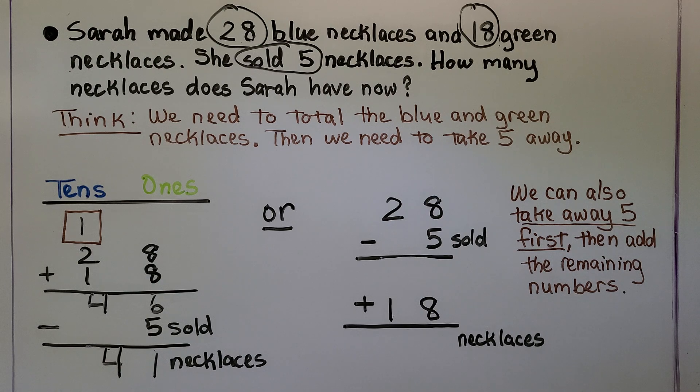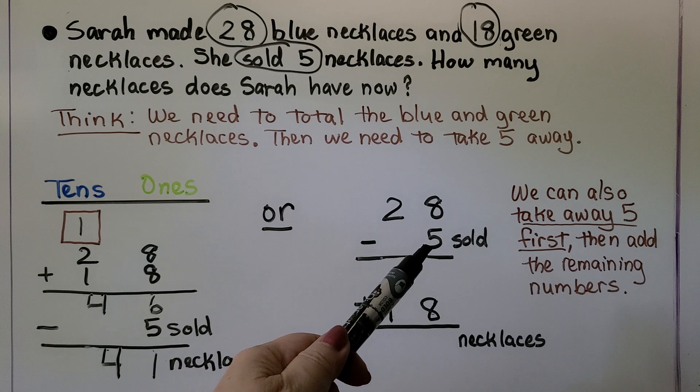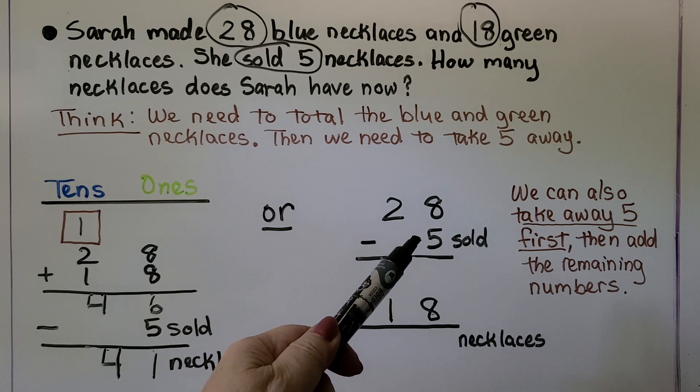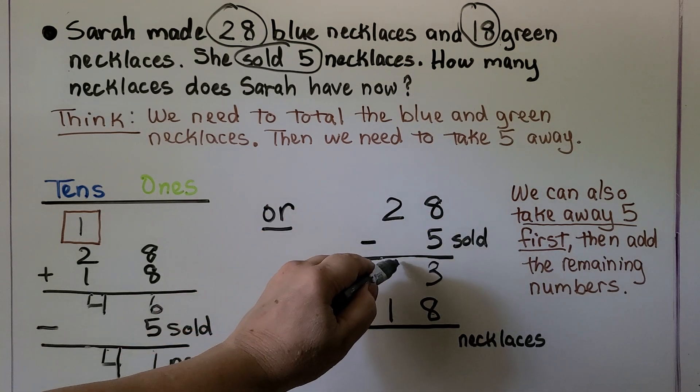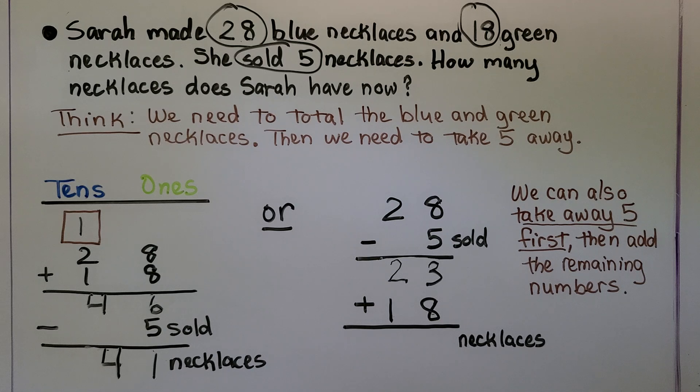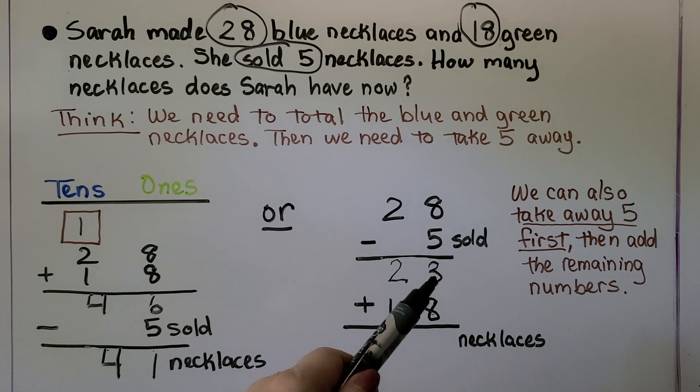Now there's another way to solve this. We could take the 28 blue necklaces and take 5 away that she sold. 8 minus 5 is 3. We just bring down the 2 because we're not taking away any tens. And we have 23. Now we add the 18 green ones. 8 plus 3 is 8, 9, 10, 11.